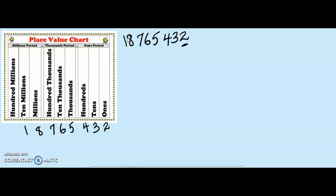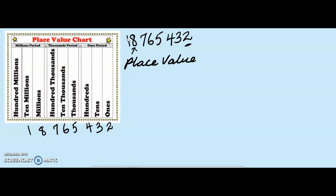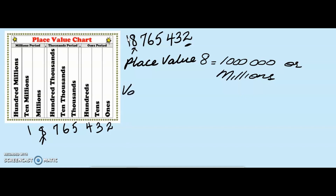If we were asked what is the place value of the digit 8 — our 8 fell into the millions column — so the place value is going to be 1,000,000 or millions. Now, what is the value of the digit 8? We simply take the digit 8 and multiply it by our place value, which is 1,000,000, and we get 8,000,000.